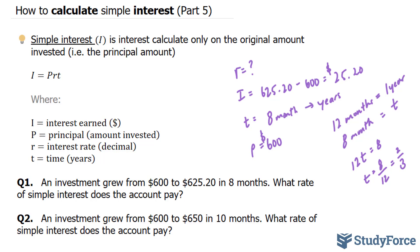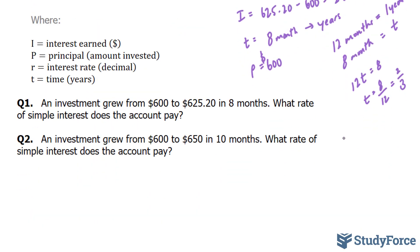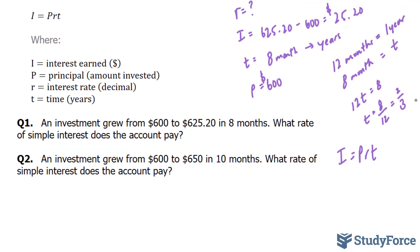I'm going to plug in everything I know into the formula i = prt. My i, as we determined, was $25.20. My p was $600. The r is what I'm looking for, so I'm going to leave that vacant. And my t was 2/3.